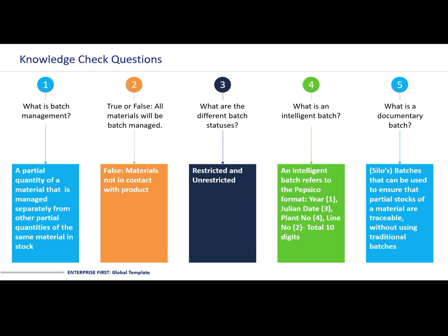We looked at the two different types of batch statuses: restricted and unrestricted. We looked at intelligent batch — the 10-digit code made on the production of finished goods or semi-finished goods. This intelligent batch refers to the PepsiCo format: year, Julian date, plant number, line number. And lastly, we touched on documentary batches — these are silos, batches that could be used to ensure that partial stocks of a material are traceable without the use of traditional batches. Now we've covered these steps, we're going to look at how the SAP system will trace that batch management.